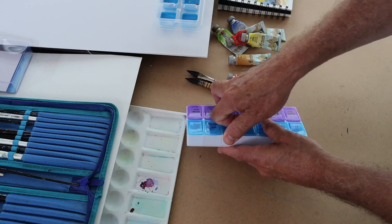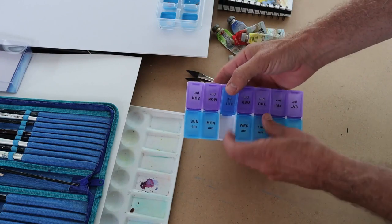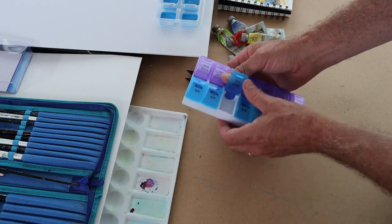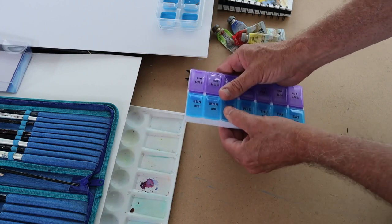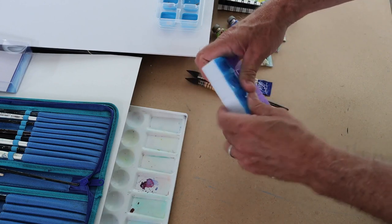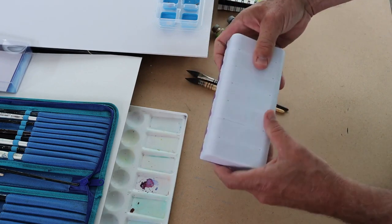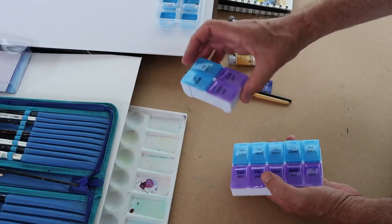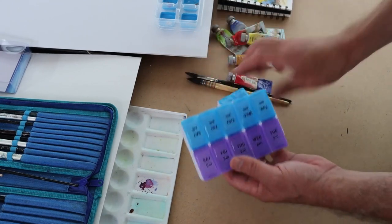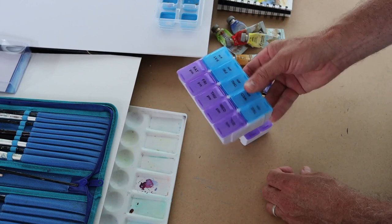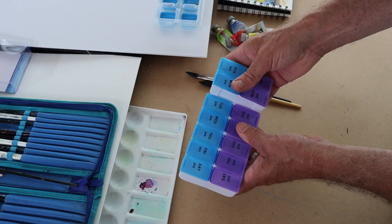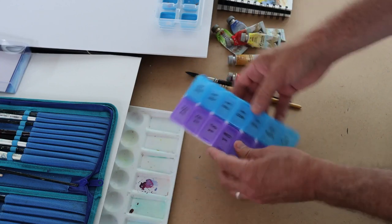And you can see you can open these compartments and they make nice little pans and they seal quite tight as well. You can also take it apart like that if you want to have a very small set or a small set like that, and they clip together quite easily again. So there you go.